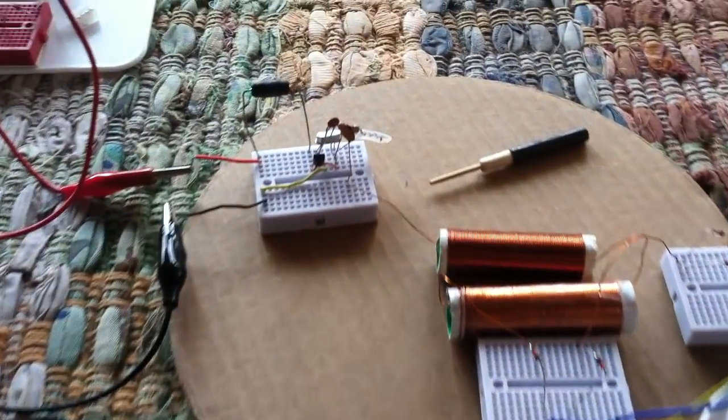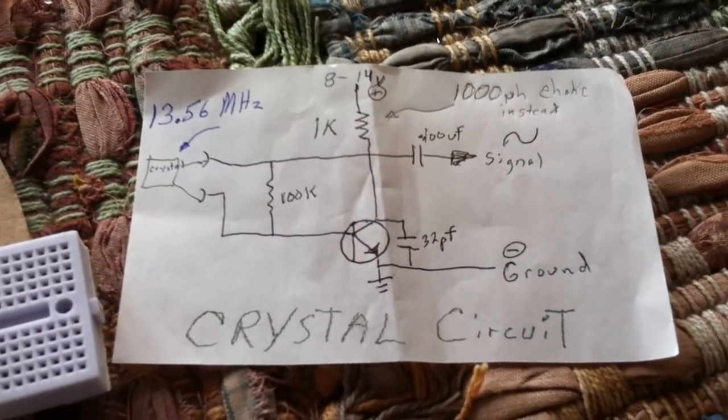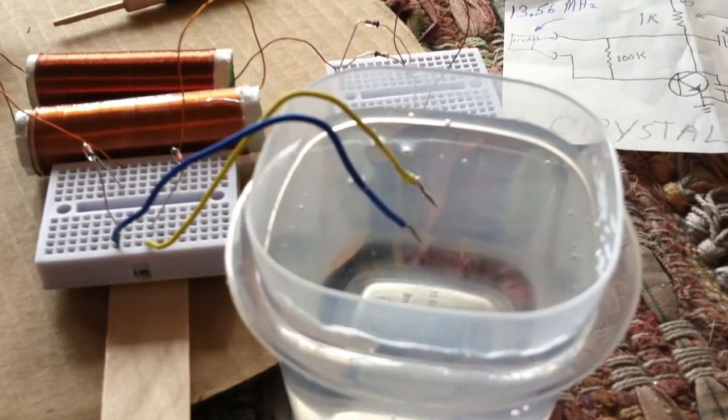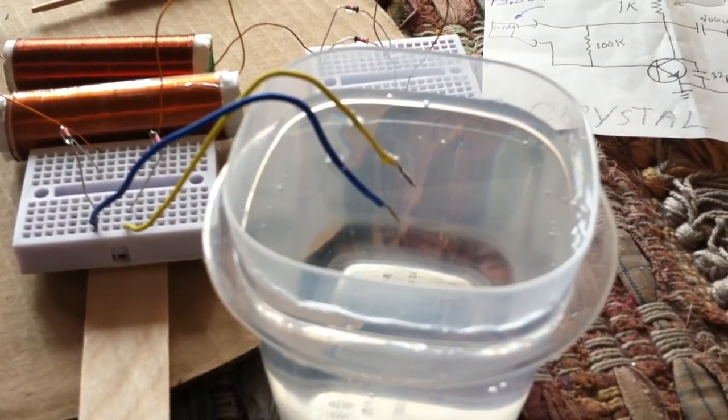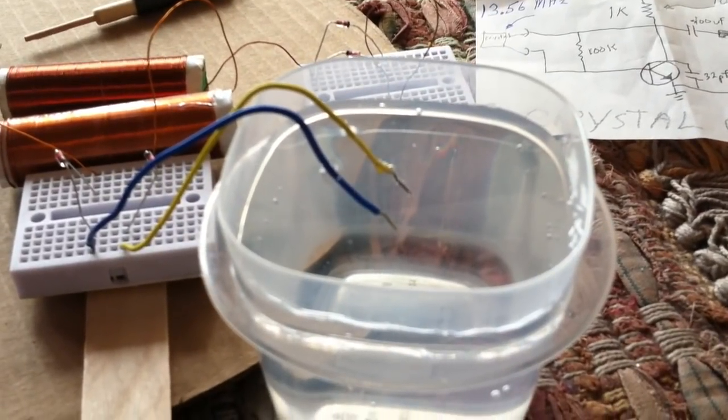So I wanted to try this little crystal oscillator that I showed in my last two videos on electrolysis and see what it did, because some people are mentioning that that 13.56 frequency does something to water.